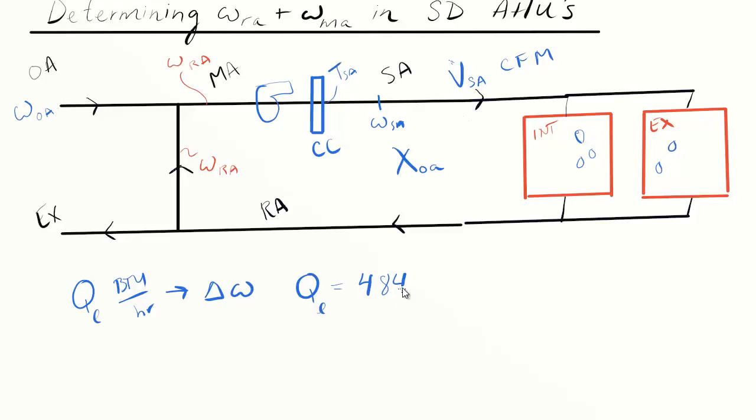We have a formulation that takes a latent load in units of BTU per hour that gives us a change in humidity ratio. I'm going to use 4840 CFM delta omega. You can think of this latent load variable as a surrogate for the amount of moisture being added to the space.